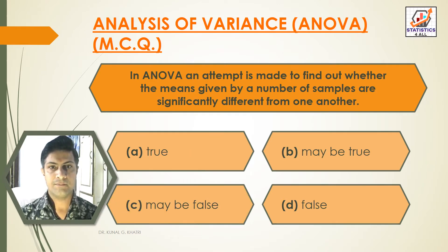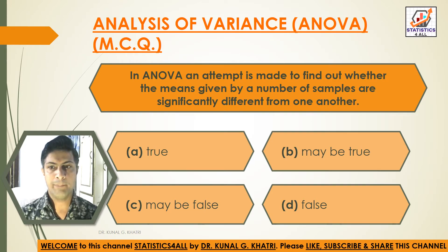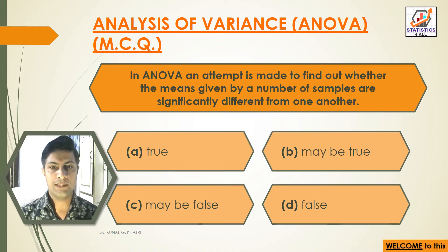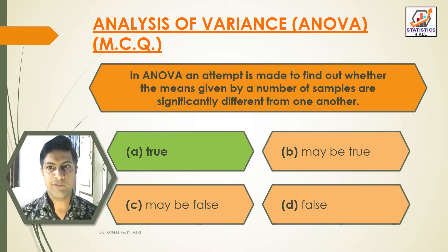Next question: In ANOVA, an attempt is made to find out whether the means given by a number of samples are significantly different from one another. Option A: True. Option B: May be True. Option C: May be False. Option D: False. Answer is Option A, True. In ANOVA, an attempt is made to find out whether the means given by a number of samples are significantly different from one another.